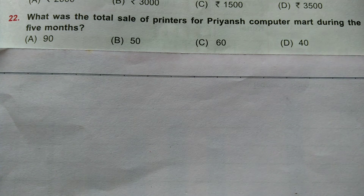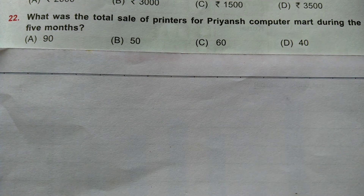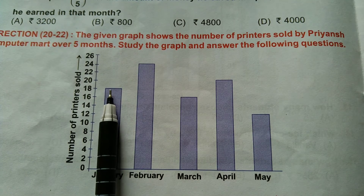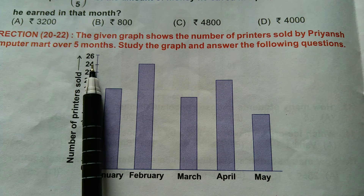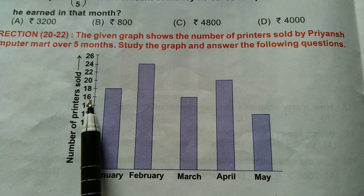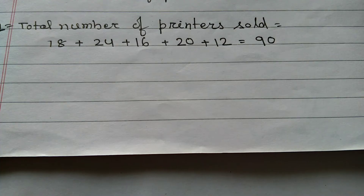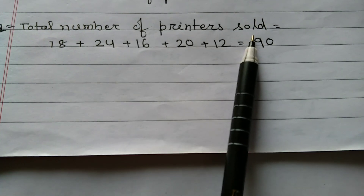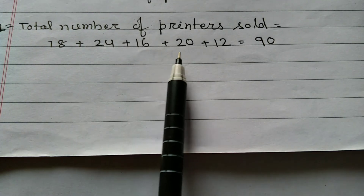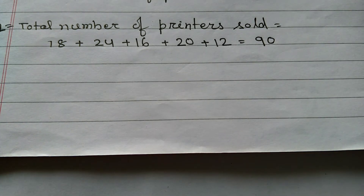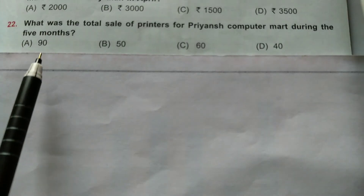Question number 22: What was the total sale of printers for Priyan's computer mart during the 5 months? Printers sold: January 18, February 24, March 16, April 20, and May 12. Hence, total number of printers sold in all 5 months: 18 plus 24 plus 16 plus 20 plus 12, that is equal to 90. Option A is correct.